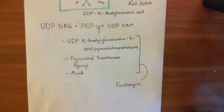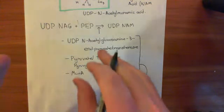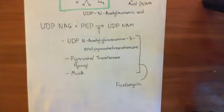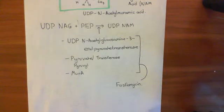Phosphomycin is an antibiotic which, when taken, will go into the bacterial cytoplasm, will find this enzyme, will bind to it, and will stop it from being able to convert UDP-N-acetylglucosamine into UDP-N-acetylmuramic acid by adding on the phosphoenolpyruvate molecule.